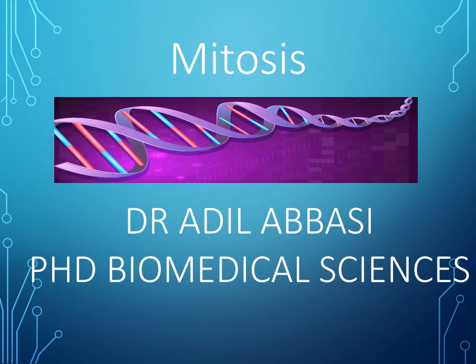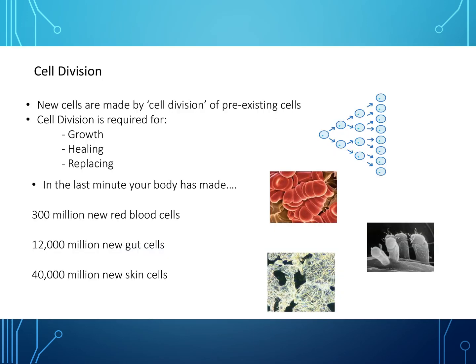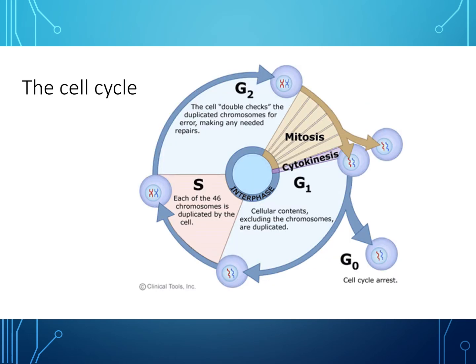Today we are looking at mitosis and the cell cycle. Cell division is when new cells are made from pre-existing cells. It is required for growth, healing, and replacing cells. In the last minute, your body has probably made about 300 million new red blood cells, 1,200,000 million new gut cells, and 40,000 million new skin cells.